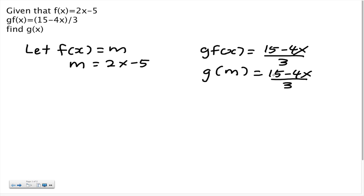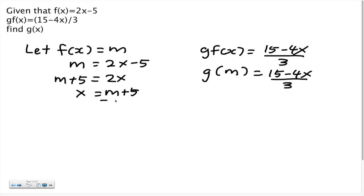The question asks us to find g(x), so if here we have m, I have to change whatever is on the right side to be in terms of m — I cannot have x. I need to find an equation with x as the subject, related to m. So over here I'm going to make x the subject: from m equals 2x minus 5, I get x equals (m plus 5) over 2. I'll call this equation 1.